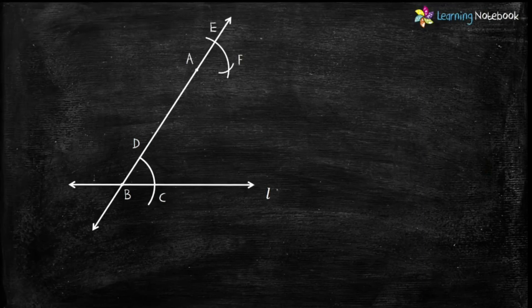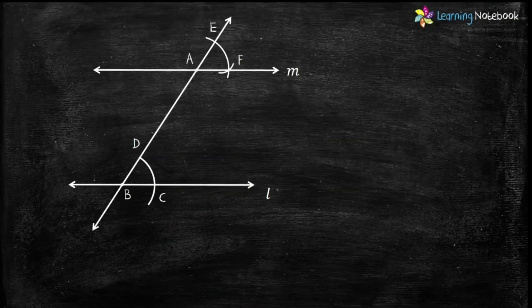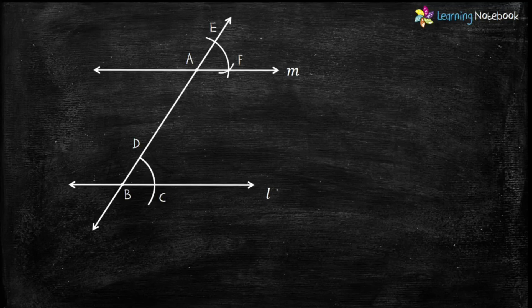And in the last step, join AF to draw the line M. Students, our construction is complete now. We have drawn line M parallel to line L.